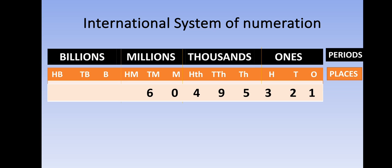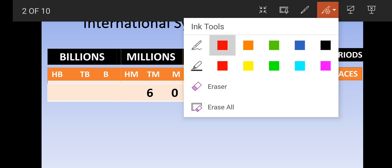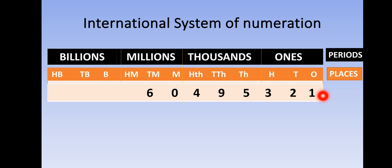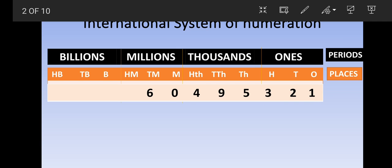Now if I want to read this number, the first step is that I will insert commas according to the international system. I will start from the right side and go towards the left, inserting commas after every three digits. This shows me the Ones period, the next three digits are in the Thousands period, and the next two are in the Millions period.